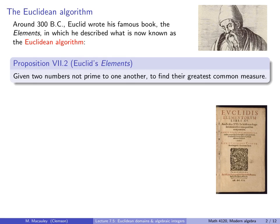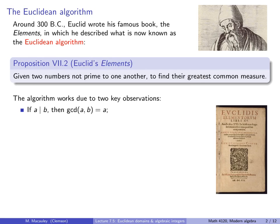This appears in the 7th book of the Elements, where Euclid poses the problem as follows: given two numbers not primed to one another, to find their greatest common measure — what we know today as the greatest common divisor. The Euclidean algorithm works due to two key observations about the integers. First, if A divides B, then the GCD of A and B is equal to A. Second, if we write A as some multiple of B plus a remainder R, where R is less than A, then the GCD of A and B is the same as the GCD of B and R.